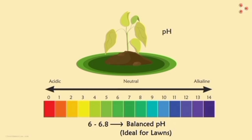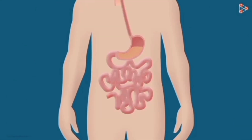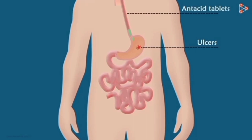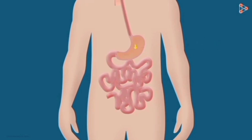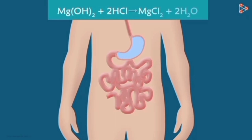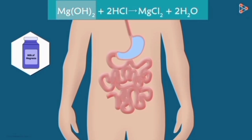Similarly, if the soil is too alkaline, its pH can be lowered by adding gypsum or other substances which neutralize the excess alkali. Our stomach produces HCl acid which aids digestion, but sometimes too much acid is produced, causing pain, irritation, and even ulcers. In order to treat this hyperacidity, a patient is advised to take antacid tablets or antacid suspensions.